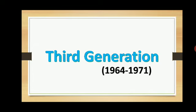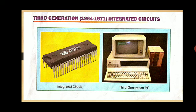Now moving further, the third generation starts from 1964 to 1971. It used integrated circuits. As we can see in the images, integrated circuits were used in computers during this period, from 1964 to 1971. Now let's see what type of hardware was used in the third generation.